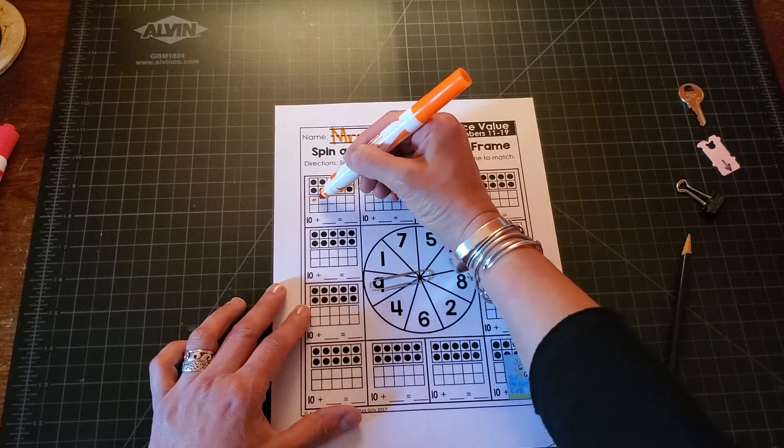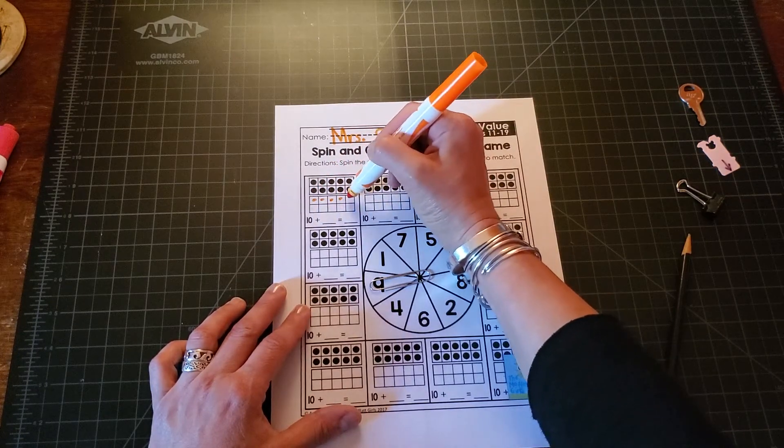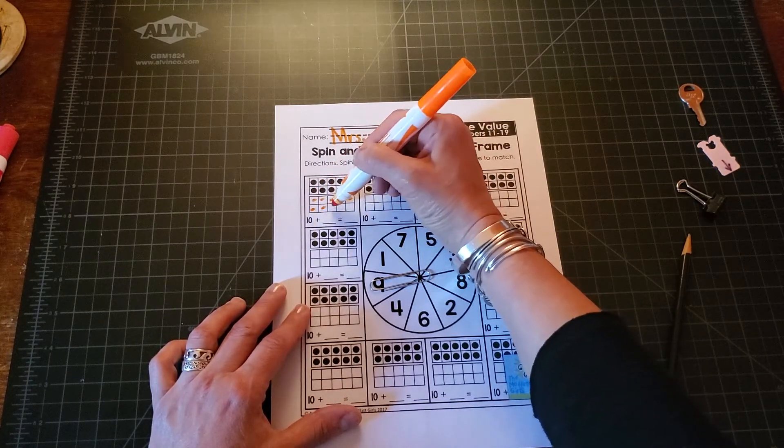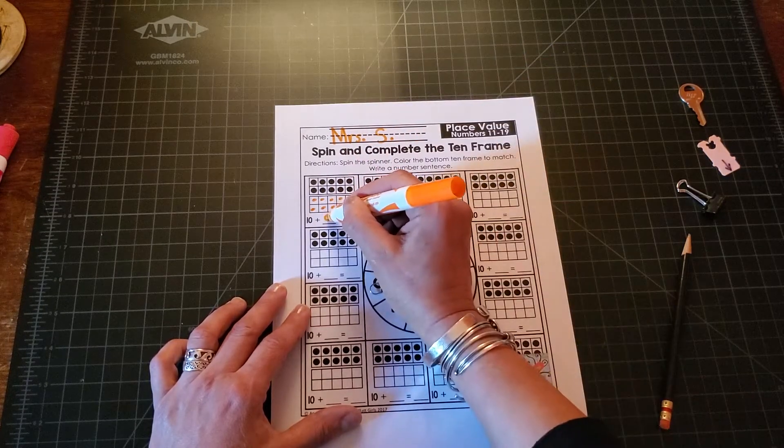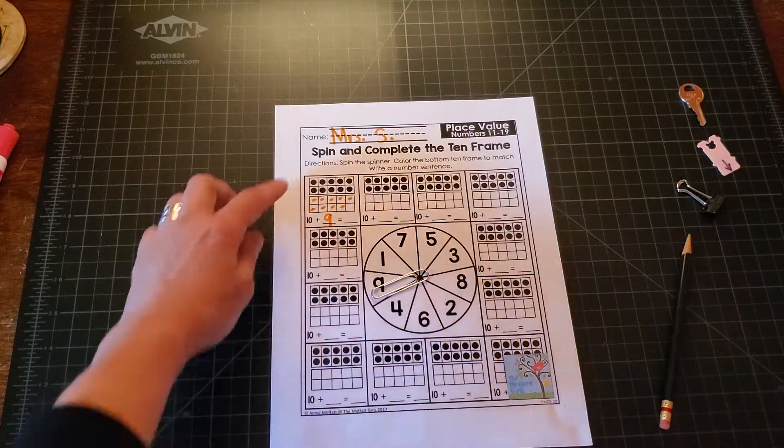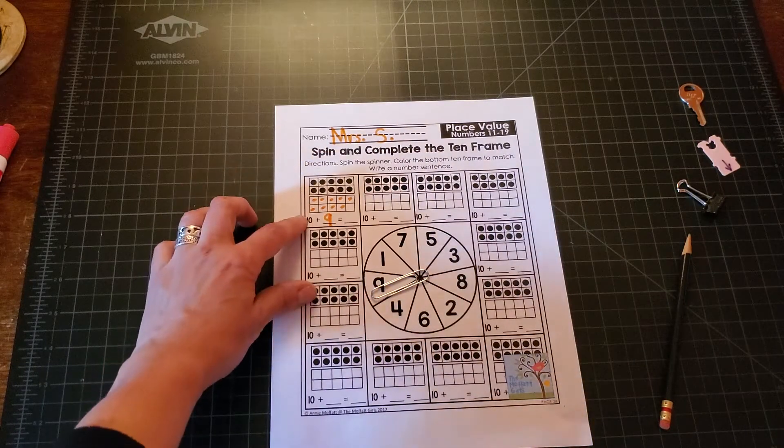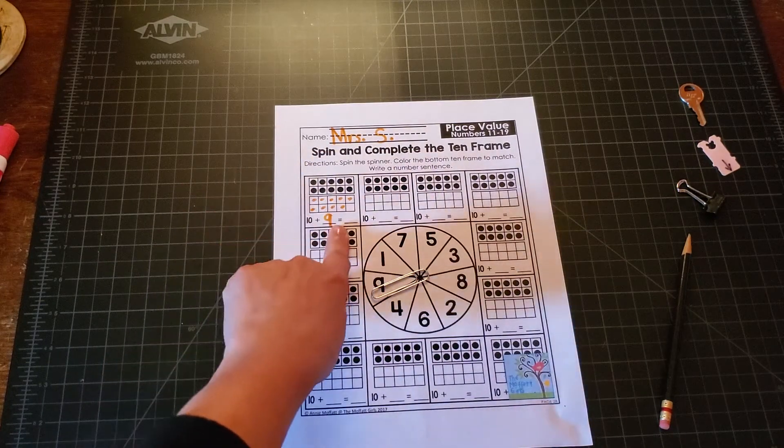So one, two, three, four, five, six, seven, eight, nine. And I'm going to write my nine here. Ten plus nine. Ten plus nine. Equals what?